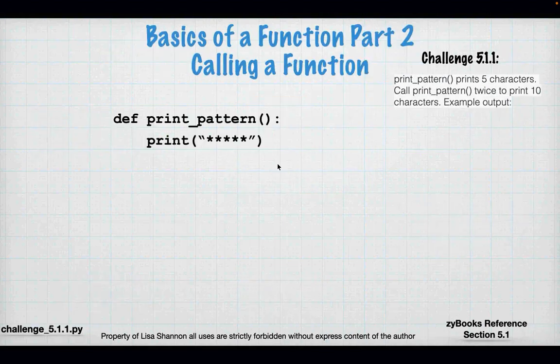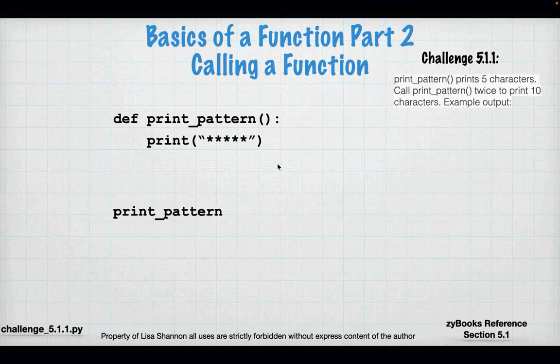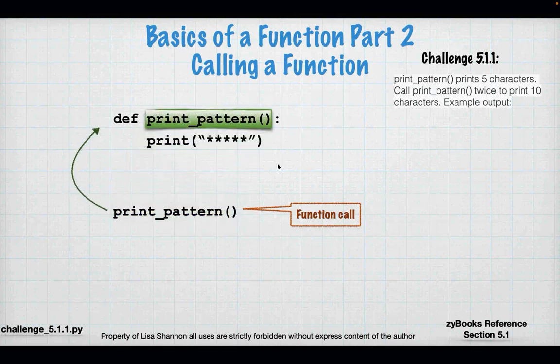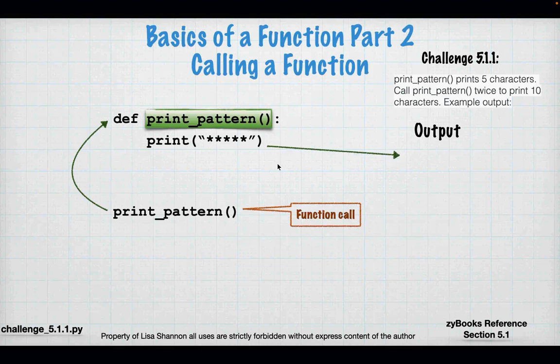A function doesn't do anything until it's called. Here I've typed 'print_pattern' — that's the name of the function. Python will execute whatever is in the local scope of print_pattern when called. The function call is written without 'def' and without the colon. In this case the output is just going to be a bunch of stars. I'm going to switch back and forth with code a lot tonight because code examples are especially important in this module.